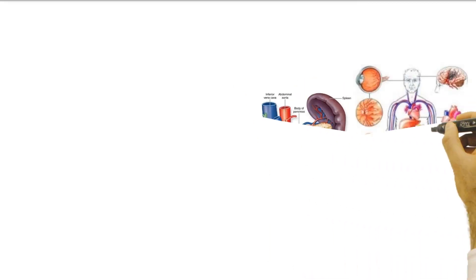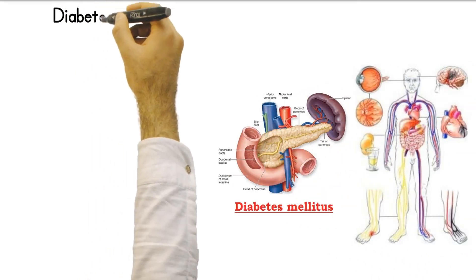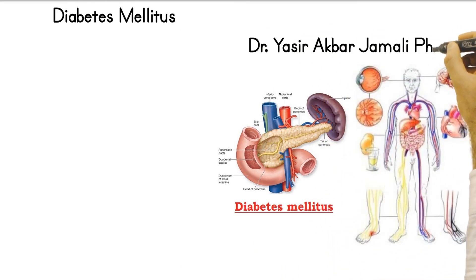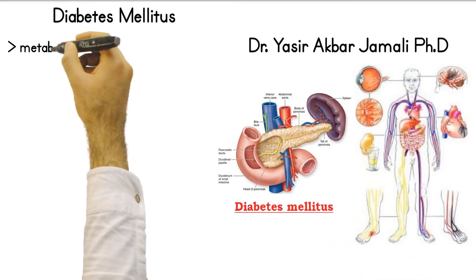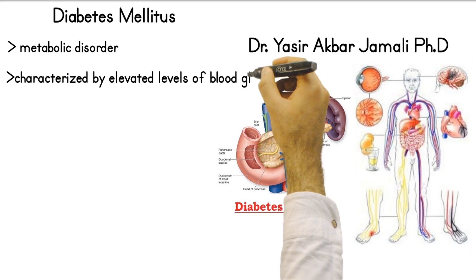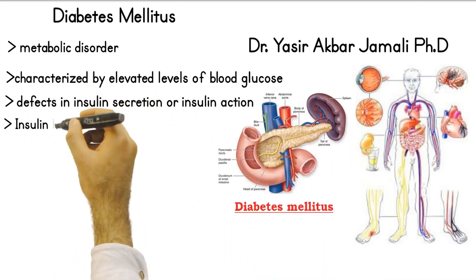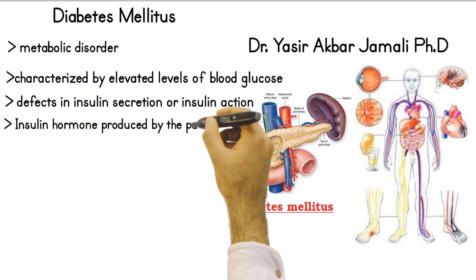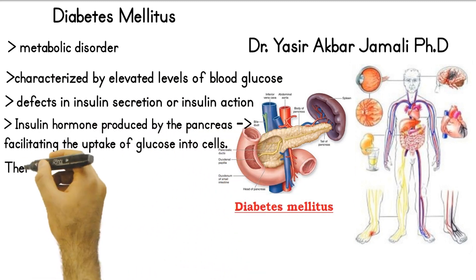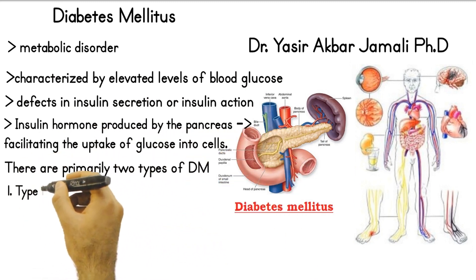Diabetes mellitus is a chronic metabolic disorder characterized by elevated levels of blood glucose, hyperglycemia, resulting from defects in insulin secretion, insulin action, or both. Insulin is a hormone produced by the pancreas that plays a crucial role in regulating blood sugar levels by facilitating the uptake of glucose into cells.